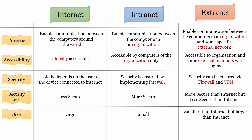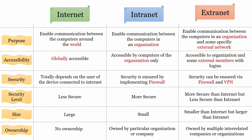Being a global network, internet is a large network. Being restricted to a company, intranet is a small network. Being restricted to a company and some of its external members, extranet is smaller than internet but larger than intranet. If we talk about ownership: internet is made up of a large number of independent networks, so nobody owns internet. However, intranet is owned by a particular organization or company. An extranet is owned by multiple interrelated companies or organizations.